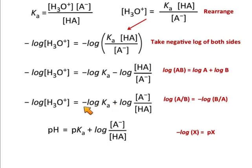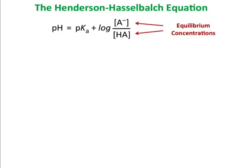And then now, the negative log of H3O+, is the pH. The negative log of the Ka is pKa. And then this term is still here. That's basically it. We call this the Henderson-Hasselbalch equation.